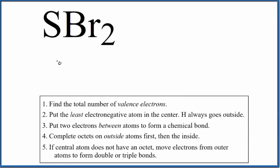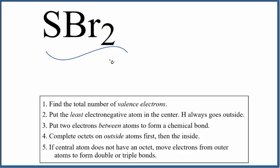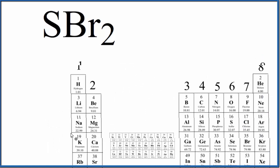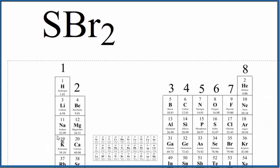Let's draw the Lewis structure for SBr2, Sulfur Dibromide. The first thing we need to do to draw the Lewis structure is count up the total number of valence electrons. We can use the periodic table to help us do that.